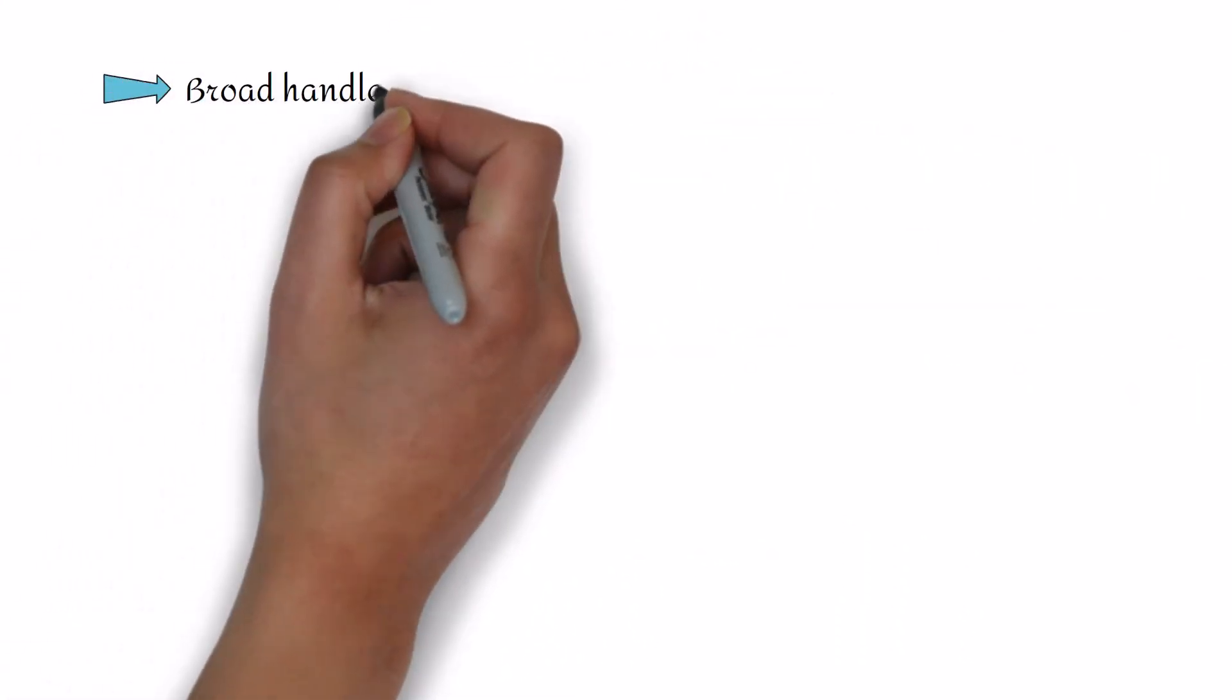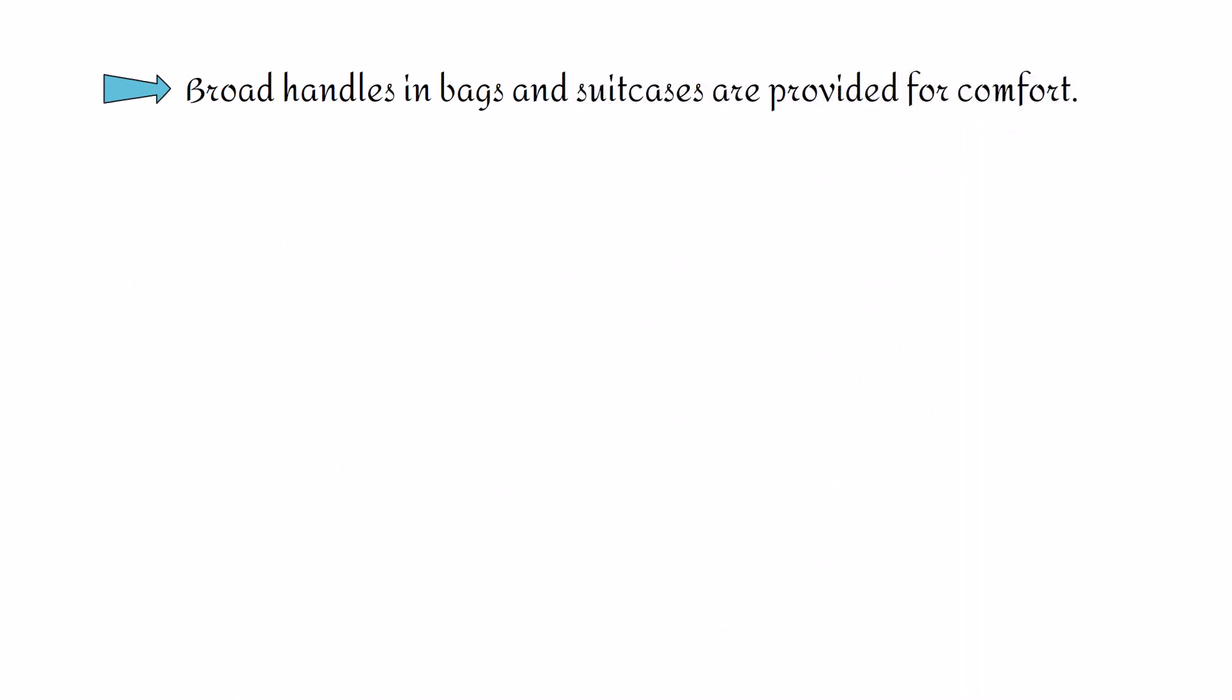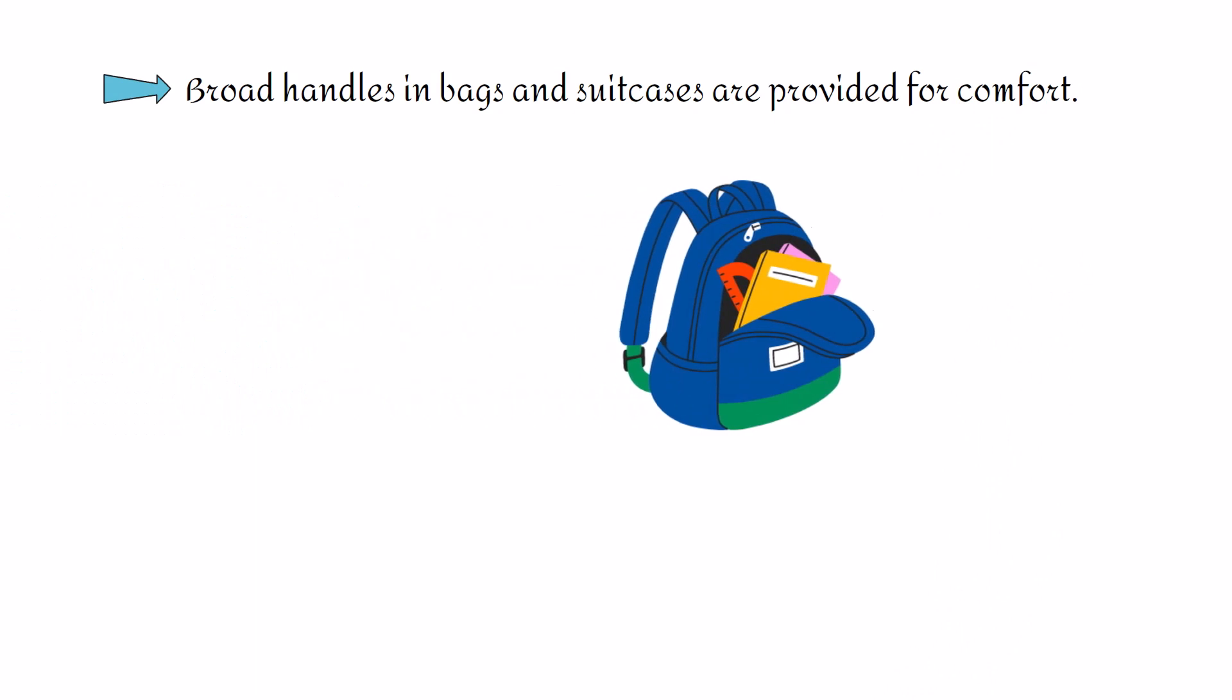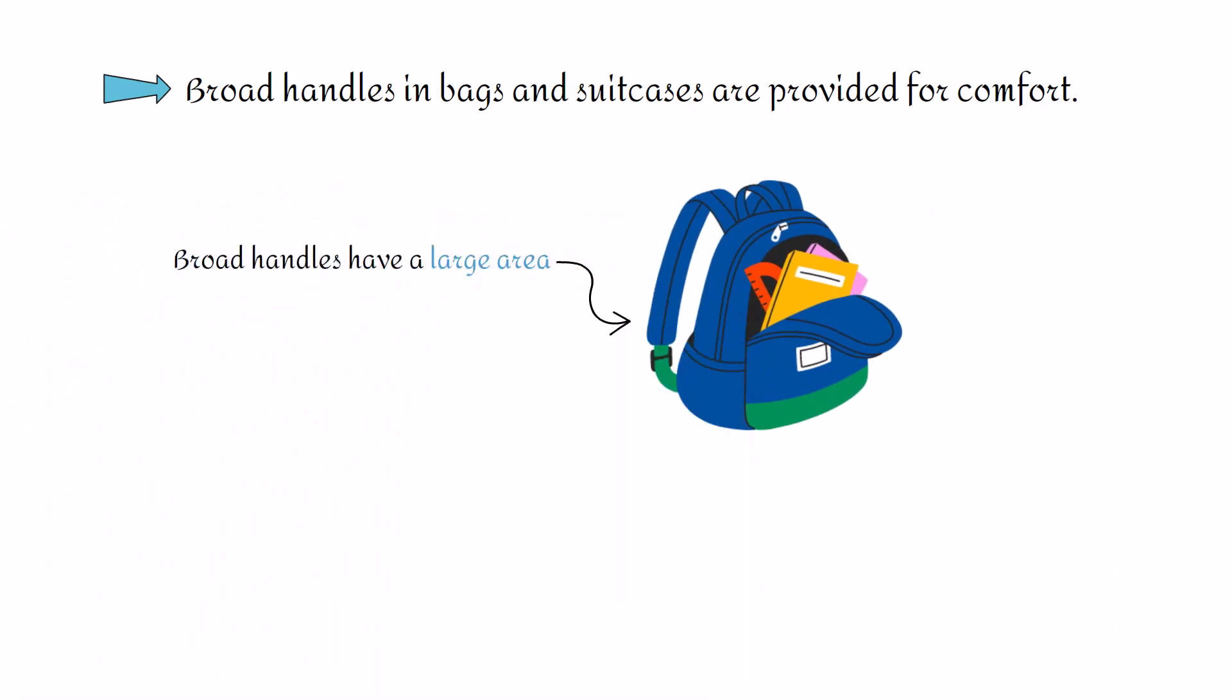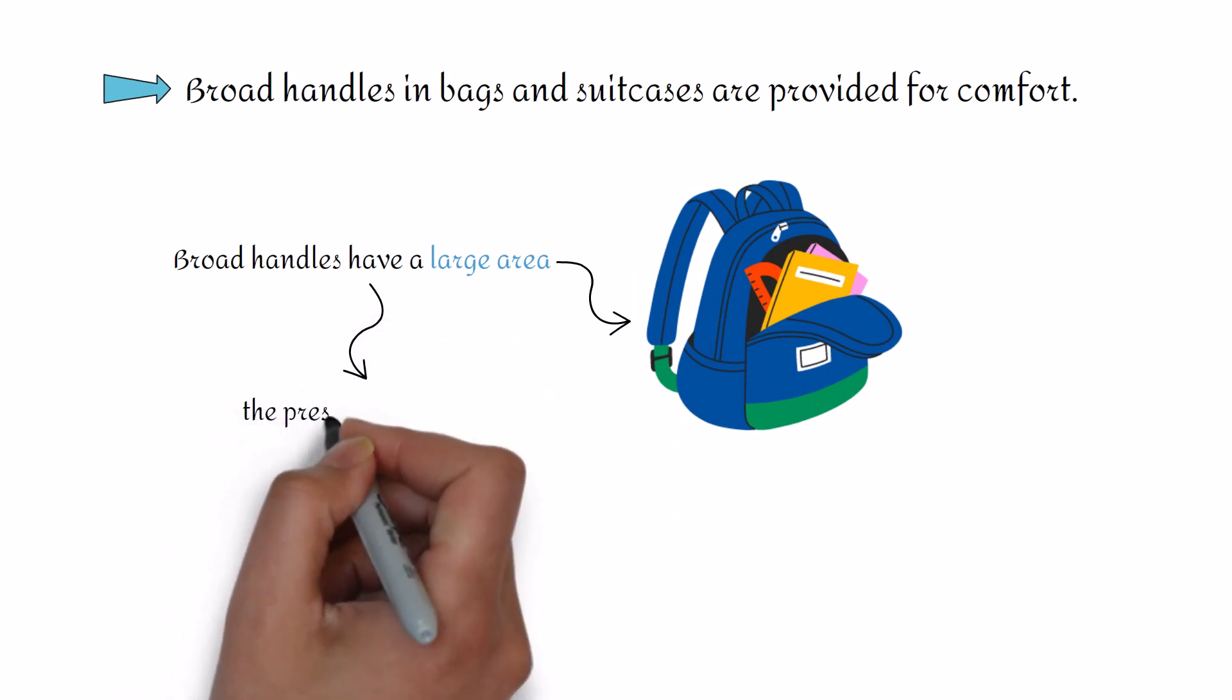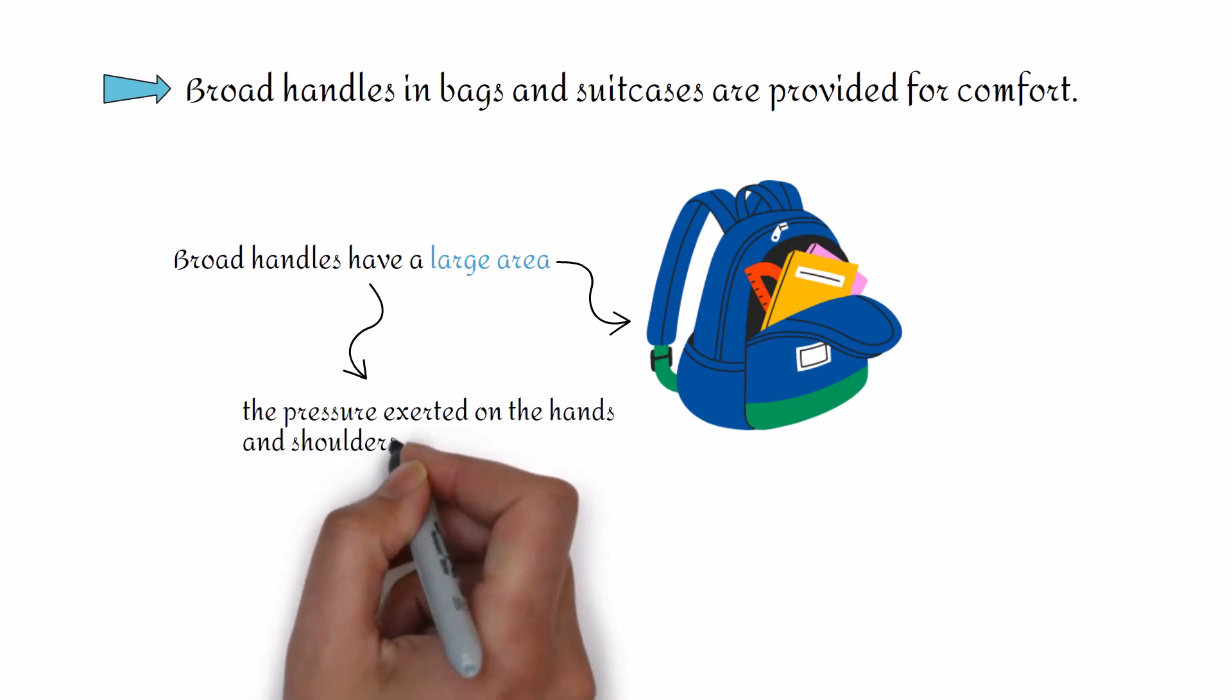Our second example is of broad handles in bags or suitcases. These broad handles in bags and suitcases are provided for comfort. Broad handles have a large area, so the pressure exerted on the hands and shoulders would be small while carrying the bags and suitcases.